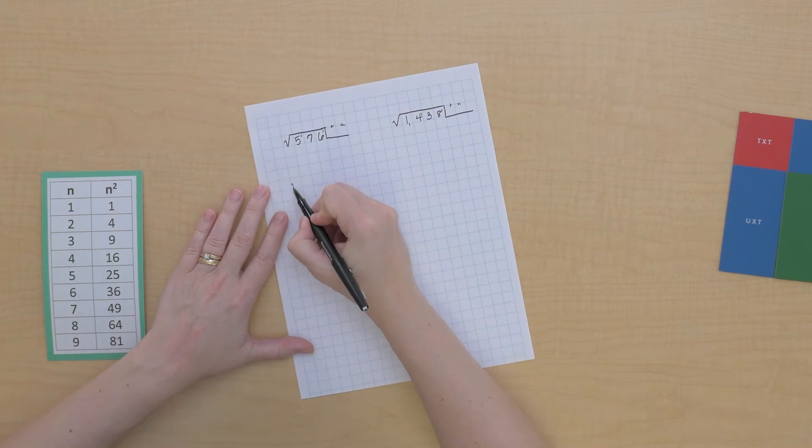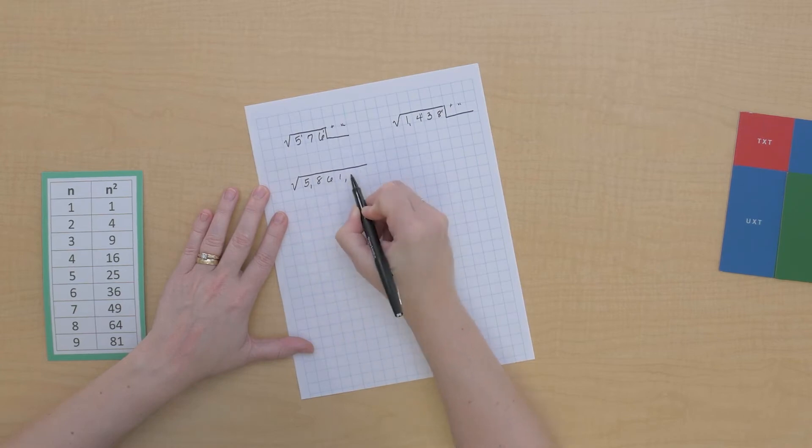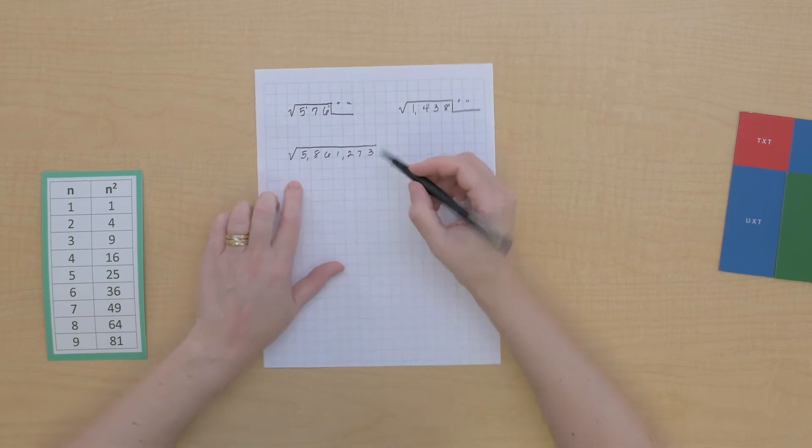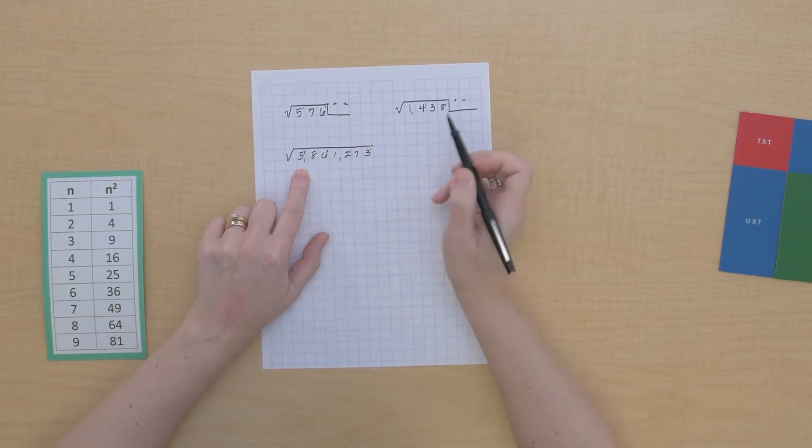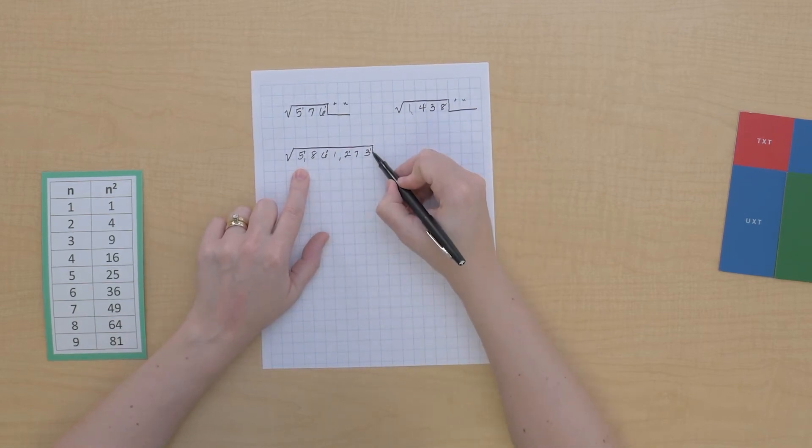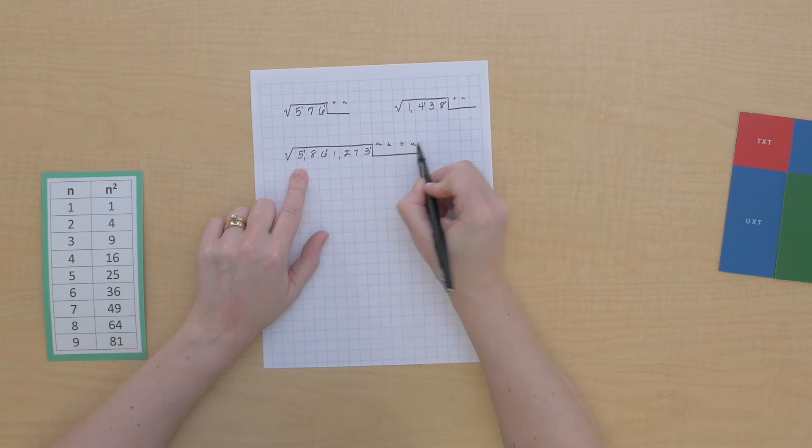Let's look at another one. Wow, how many will we have here? One, two, and two. Wow, this is going to have a four digit root. So that means we'll have thousands, hundreds, tens, and units.